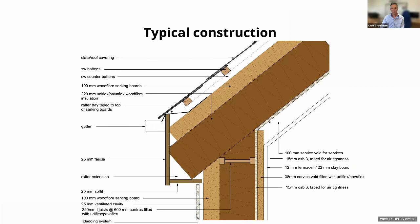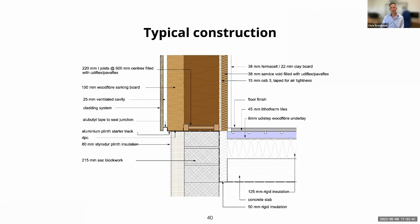A fairly standard plinth detail has an externally insulated lightweight block plinth with timber frame and wood fibre board on the outside. We also recommend insulating the service void — it restricts your ability to add more wiring later, but it gives you a much better sounding building. Insulating the service void cushions the plasterboard and gives you a much more solid sounding result — in our own office we didn't do that and the sound of touching the walls is noticeably hollow.